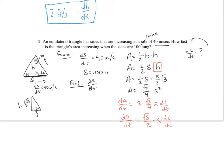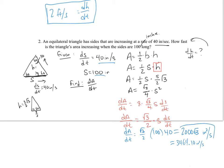I know ds/dt — that's 40, as given. I know s — they want to evaluate when it's 100. And we have the constant root 3 over 2. Multiplying all this out, dA/dt equals 2,000 root 3 square inches per second, which is approximately 3,464.10 square inches per second. That's how fast the area is changing.